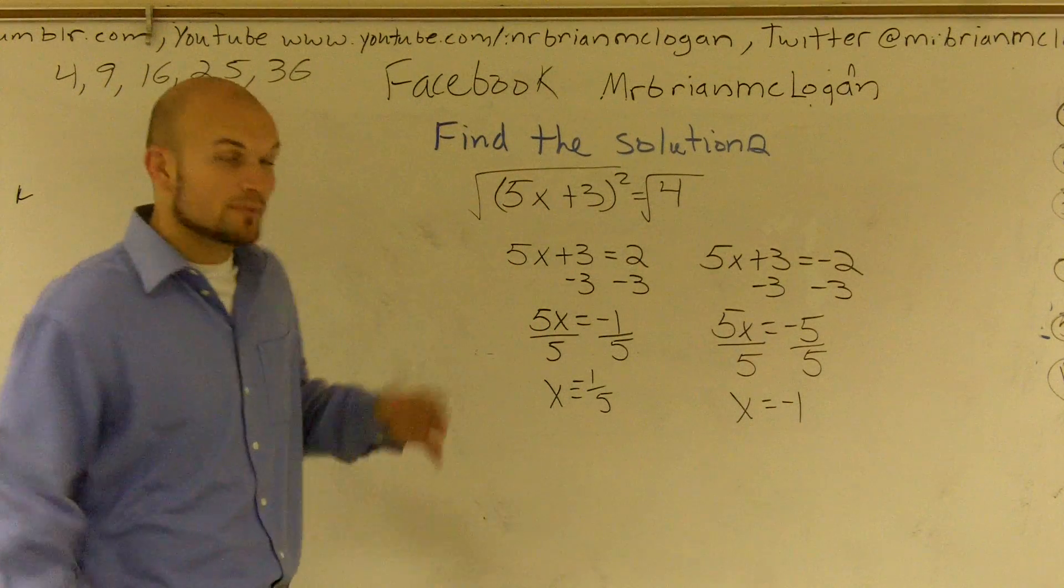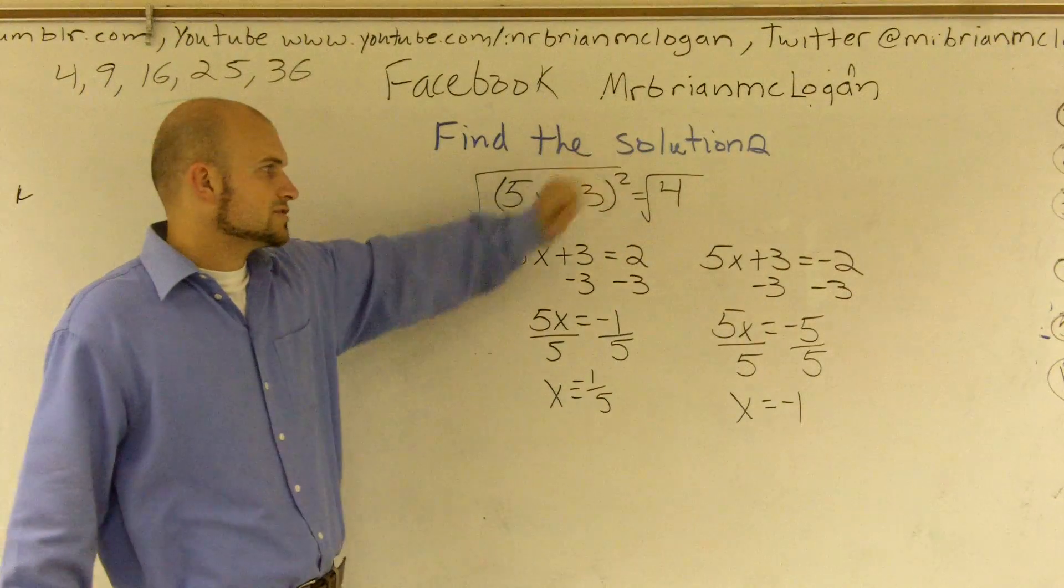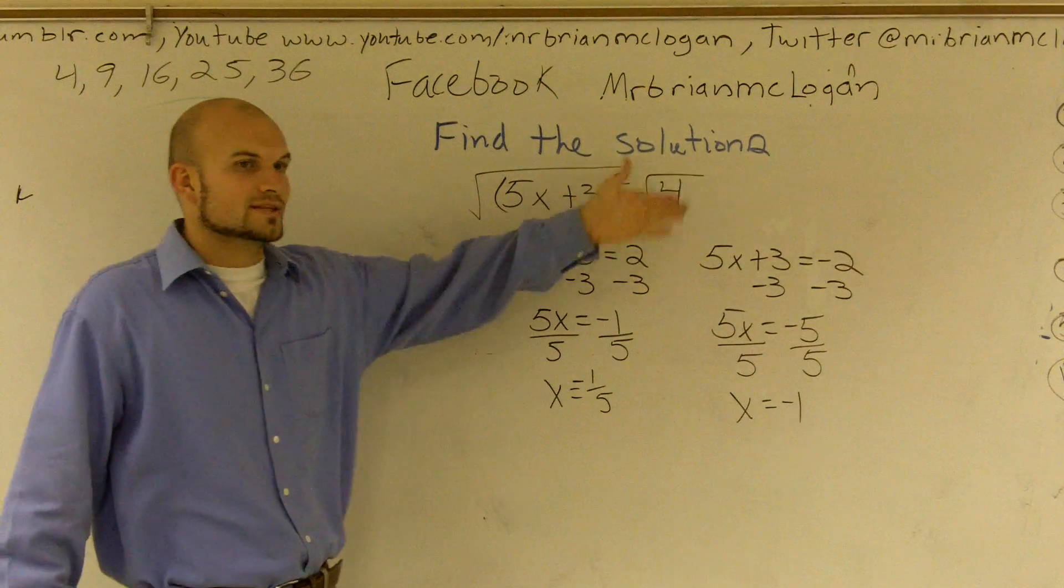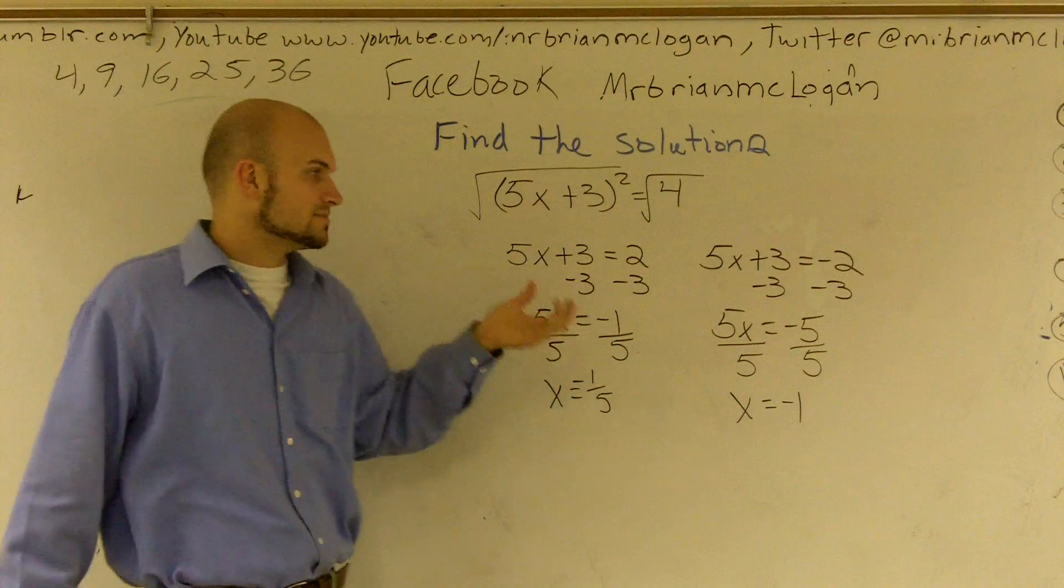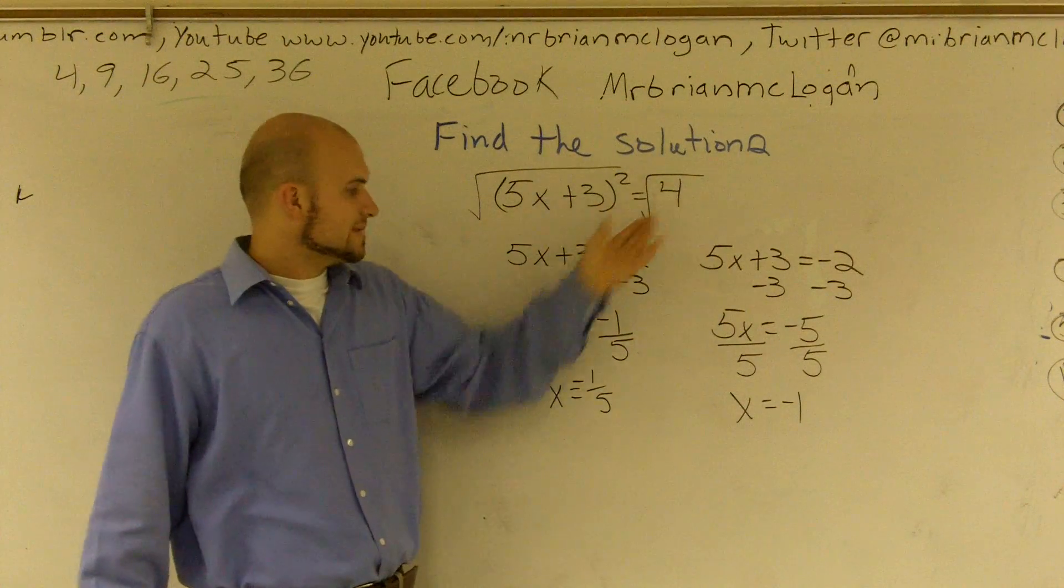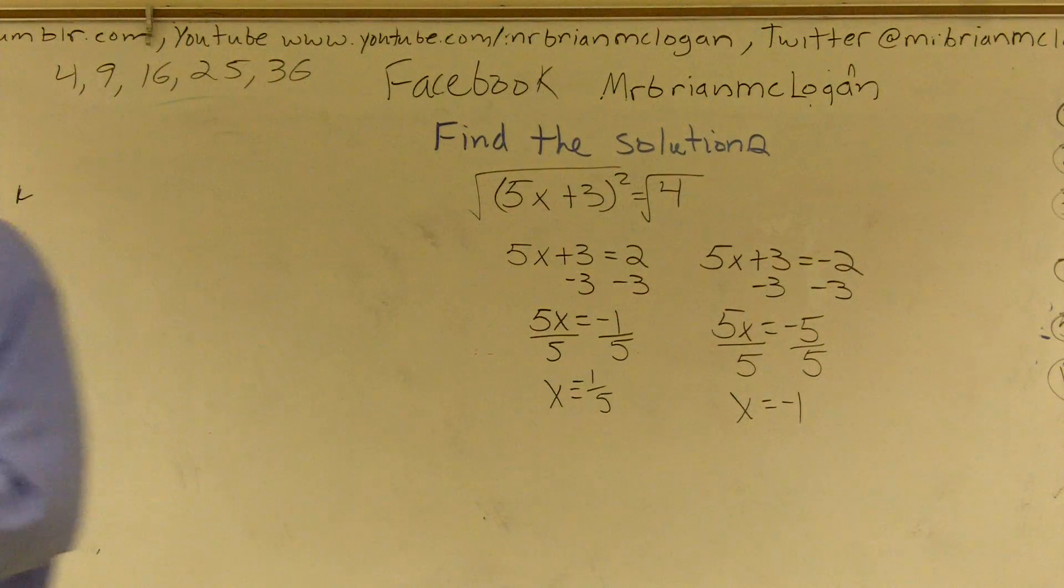So the important thing to remember on this type of problem is you've got to undo that squaring by taking the square root. And then remember, when you're taking the square root of a number, you don't know if it's going to be positive or negative. So you're going to want to make sure you use both of those values in evaluating for the solutions.